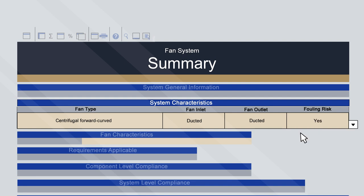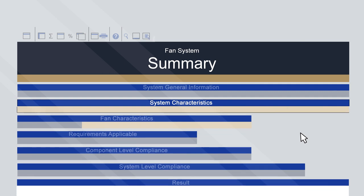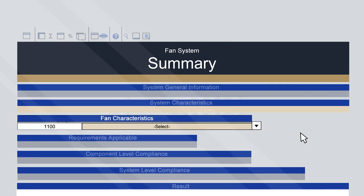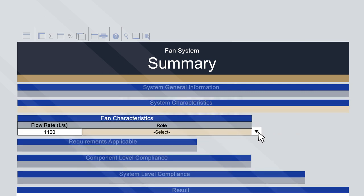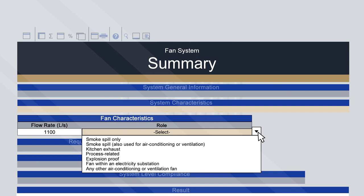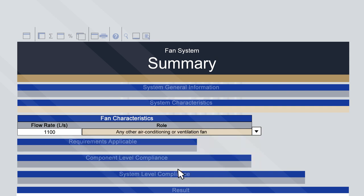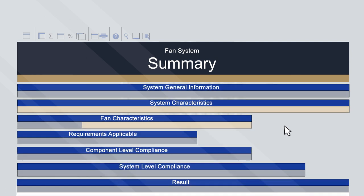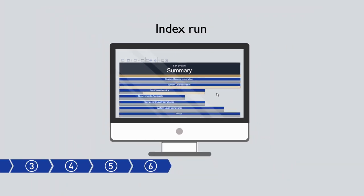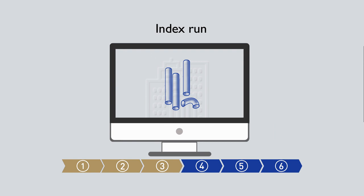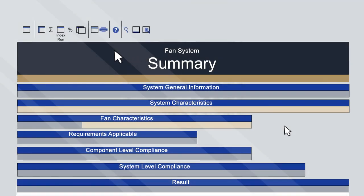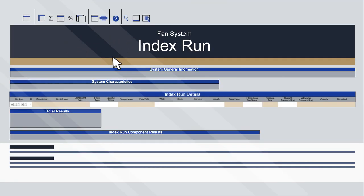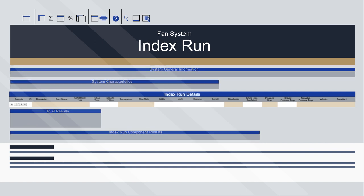The role of the fan is selected in the same way. For this example, the fan is considered any other air conditioning or ventilation fan. Step 3: the Index Run. Navigate to the Index Run sheet, where a model of the system can be analysed by listing each component of the duct along with its specifications.